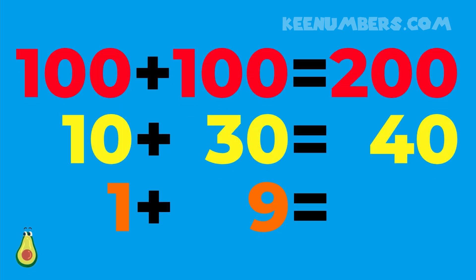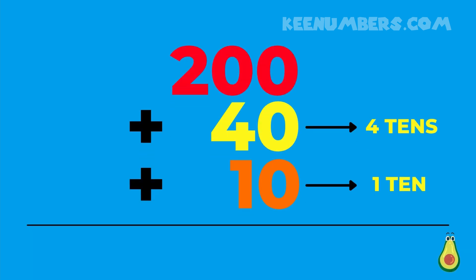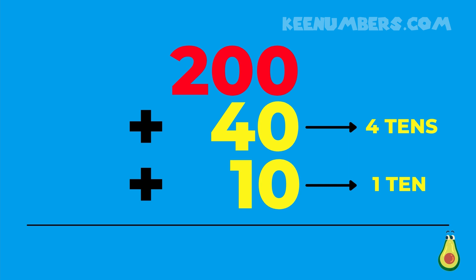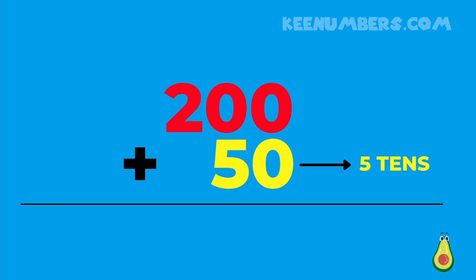Likewise, 10 plus 30 is 40 because we're talking about 1 ten plus 3 tens — 1 and 3 are 4, so that's 4 tens. 10 plus 30 equals 40. And 1 plus 9 — we know that, that's 10. Already we're making a lot of progress on this problem. We're going to simplify it. We have 1 ten and we have 4 tens, so we can consolidate these numbers. 40 and 10 are really 4 tens and 1 ten — 4 and 1, that's 5 — so we're talking about 5 tens, also known as 50.